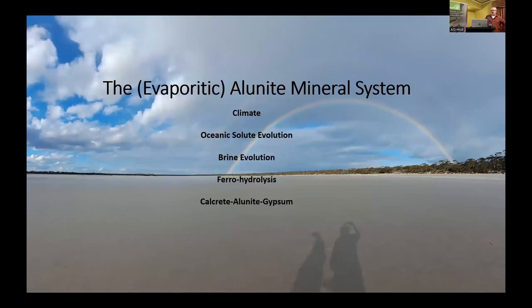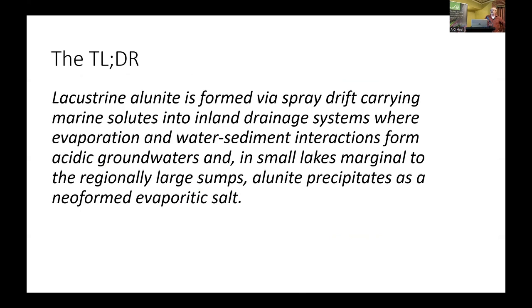However, we're talking about evaporative alunite and its mineral system, which is completely different. The summary is that lacustrine alunite is formed via spray drift carrying marine solutes into inland drainage systems, where evaporation and water–sediment interactions form acidic groundwaters, and in small lakes adjacent and marginal to regionally large sumps, alunite precipitates as a neo-formed evaporative salt. This is a salt ore body — not a clay. It looks like a clay, it cracks like a clay, but it's a salt.